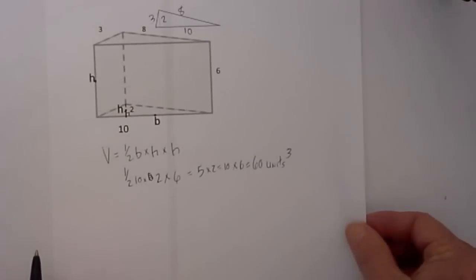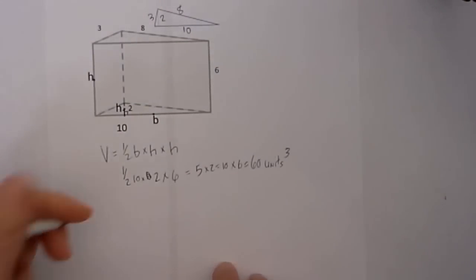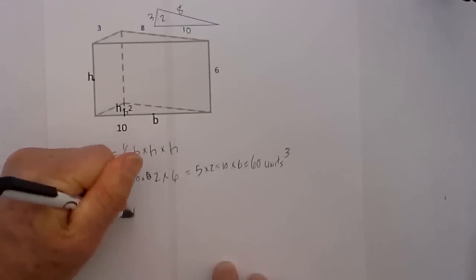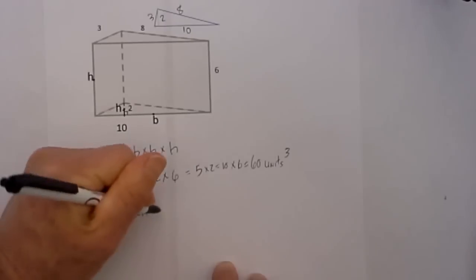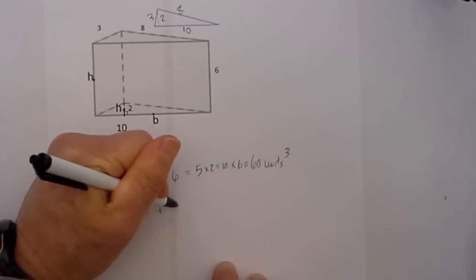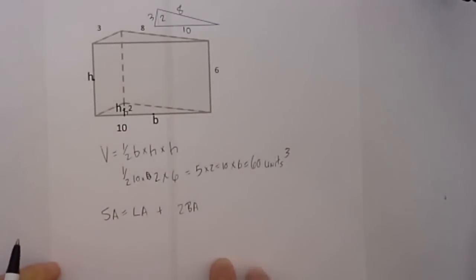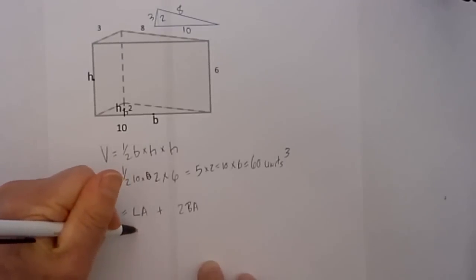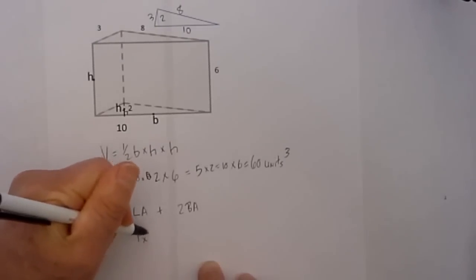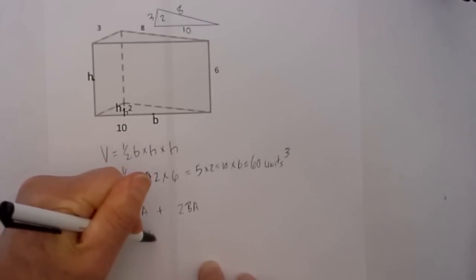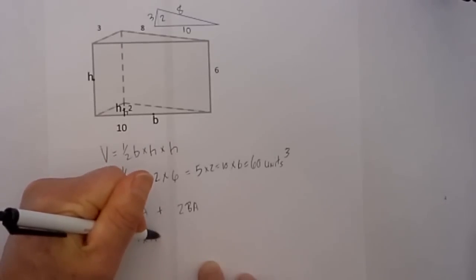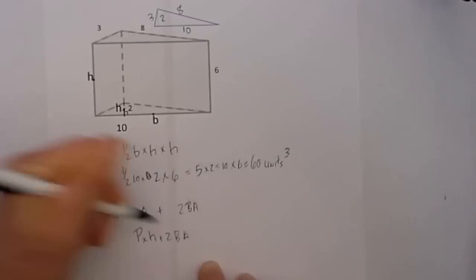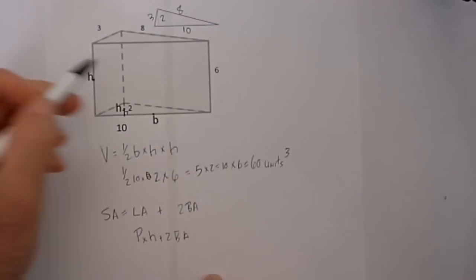Let's tackle the surface area. With surface area we will first find the lateral area and add that to 2 of the base areas. In order to find the lateral area we find the perimeter of the triangle. The lateral area will be the perimeter times the height of the prism, plus 2 base areas.